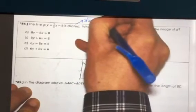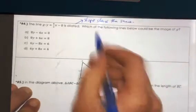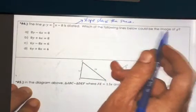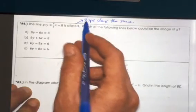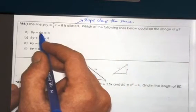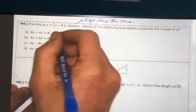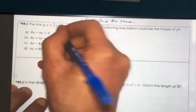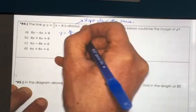Which of the following lines below could be the image of G? We simply want the one that has the same slope. So for each of these you should solve them for y. In this case you add six x to both sides and divide by eight, and you get y equals six over eight x plus eight over eight.